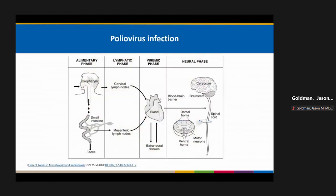After infection, usually through the oropharynx and potential replication in the small intestine, polio virus can enter the lymphatic system and from there enter the blood in a viremic phase, with adverse effects on the neural system. It can directly damage motor neurons and, if it passes the blood-brain barrier, can cause meningitis.